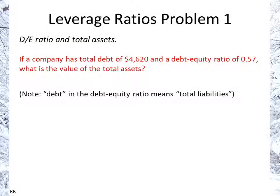Welcome to leverage ratios problem one. This is one where we're given the debt equity ratio and we'll calculate the total assets. If a company has total debt of 4,620 and a debt equity ratio of 0.57, what is the value of total assets?